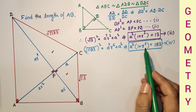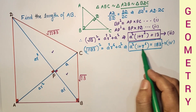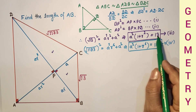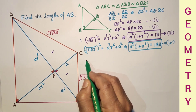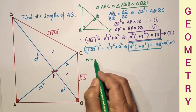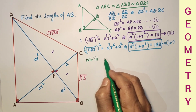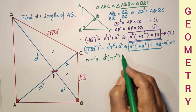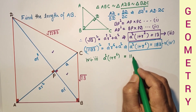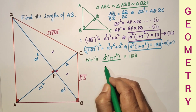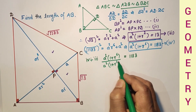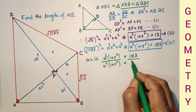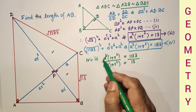From these two results, if we divide equation four by equation three, the a² terms get canceled. We get: a²(1 + r⁶) / a²(1 + r²) = 1183 / 13, which equals 91.